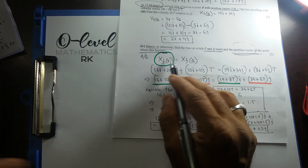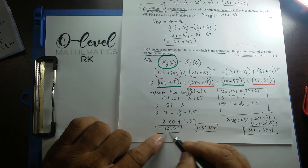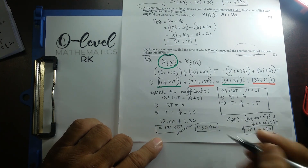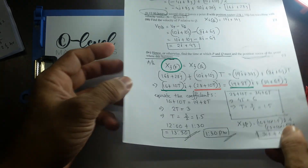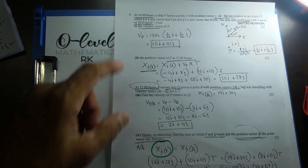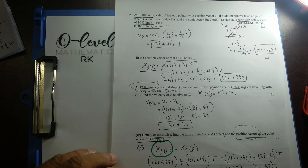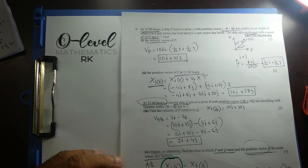That is the position vector of both ship P and Q at their meeting point. This completes the main vector relative velocity questions covered across the last three videos. If you still have questions, leave them in the comment box and I'll get back to you. Thank you, have a good day.